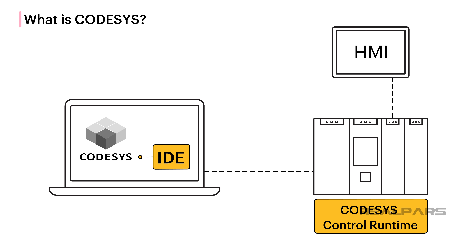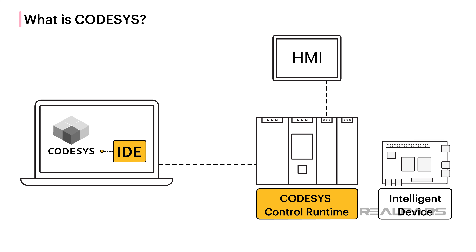The second piece of software is a runtime. The runtime executes applications developed in the Codesys Development System and serves the visualizations for those applications to clients. The Codesys runtime is typically installed on a PLC, but can be installed on any intelligent device that meets the runtime's minimum requirements, such as a Raspberry Pi. When the runtime is installed on a device, we say that the device is Codesys-compatible, since the device can execute Codesys applications.